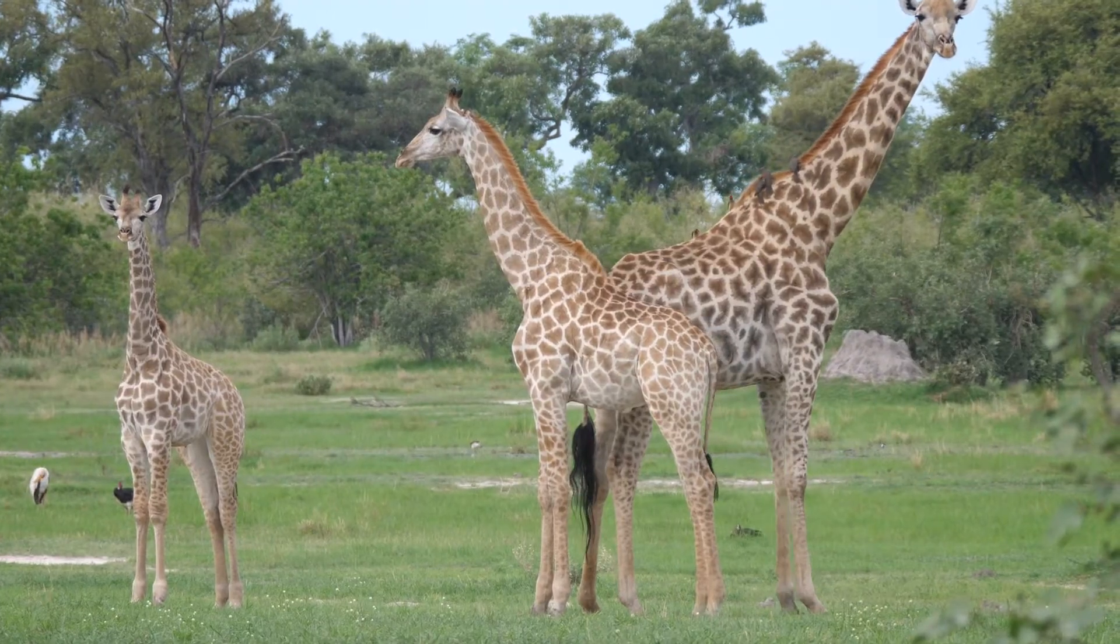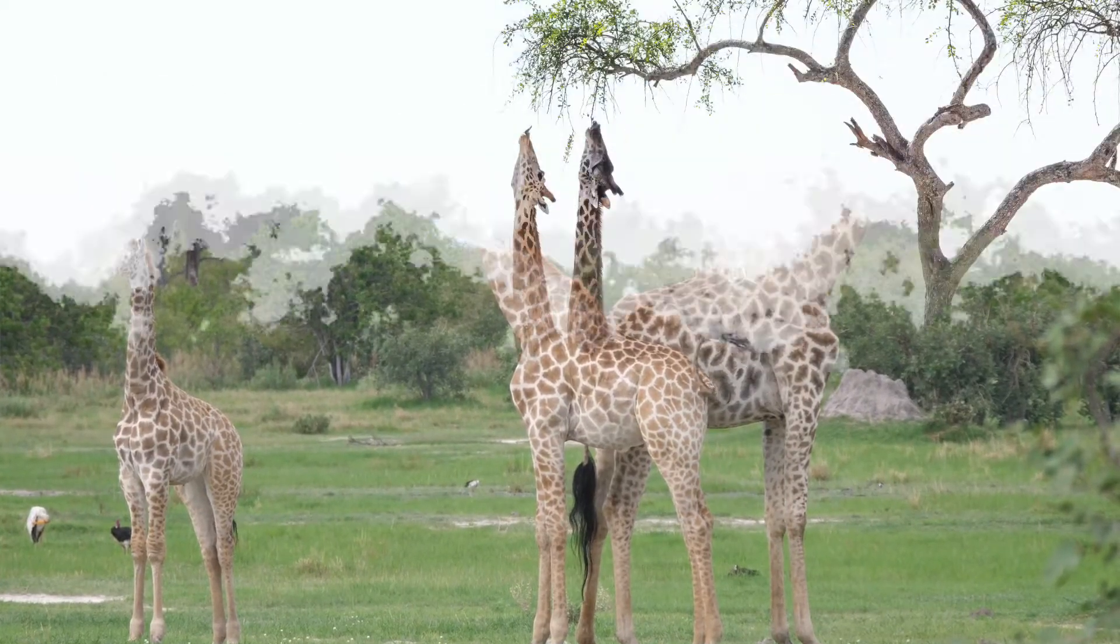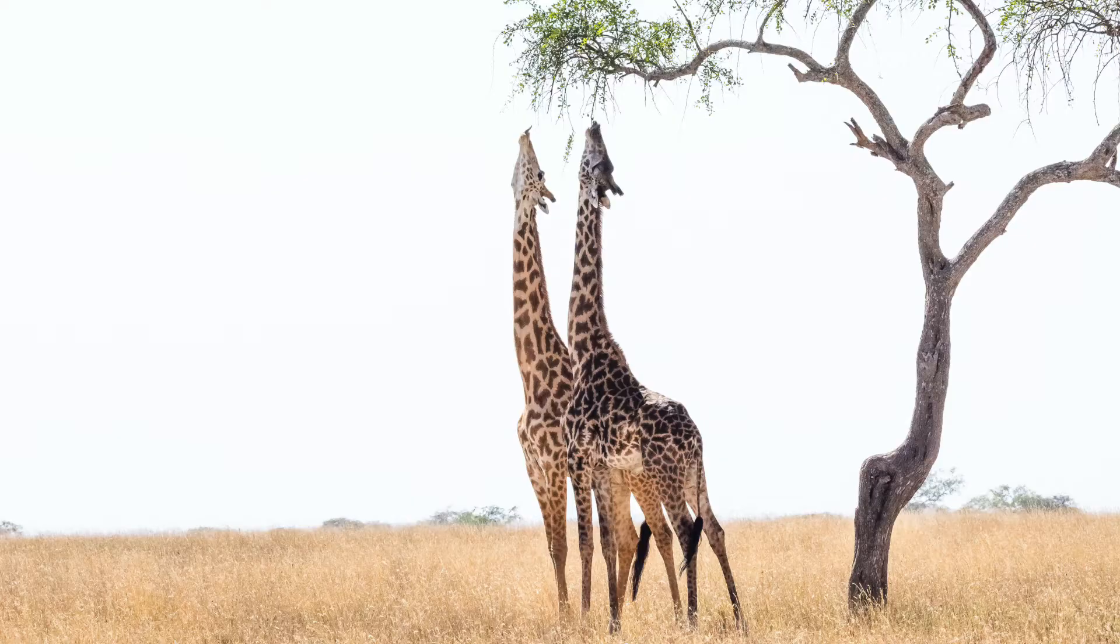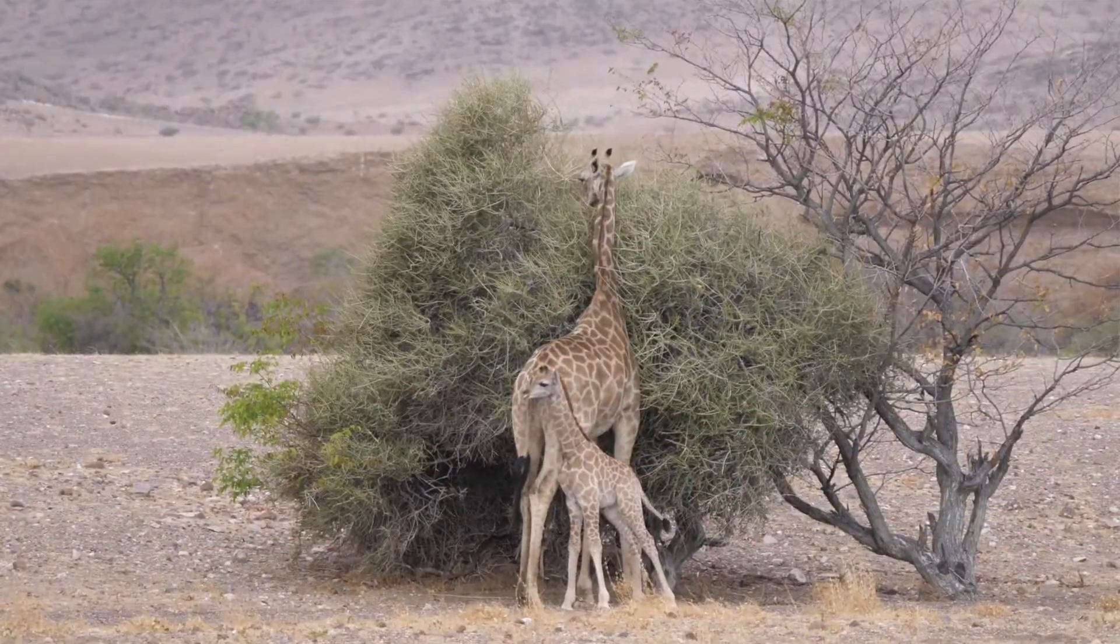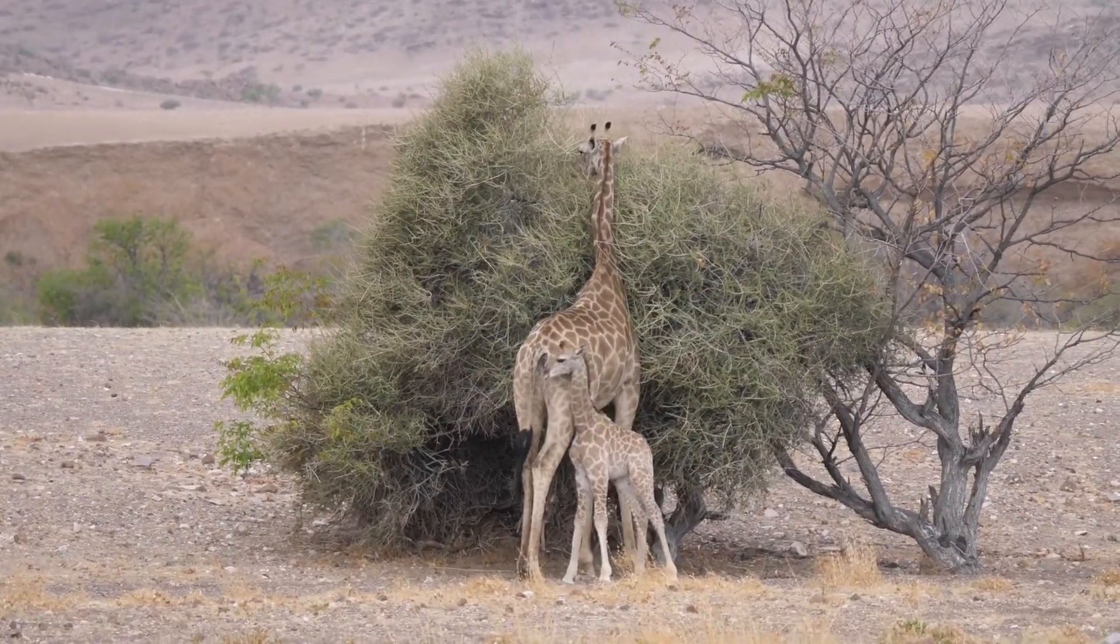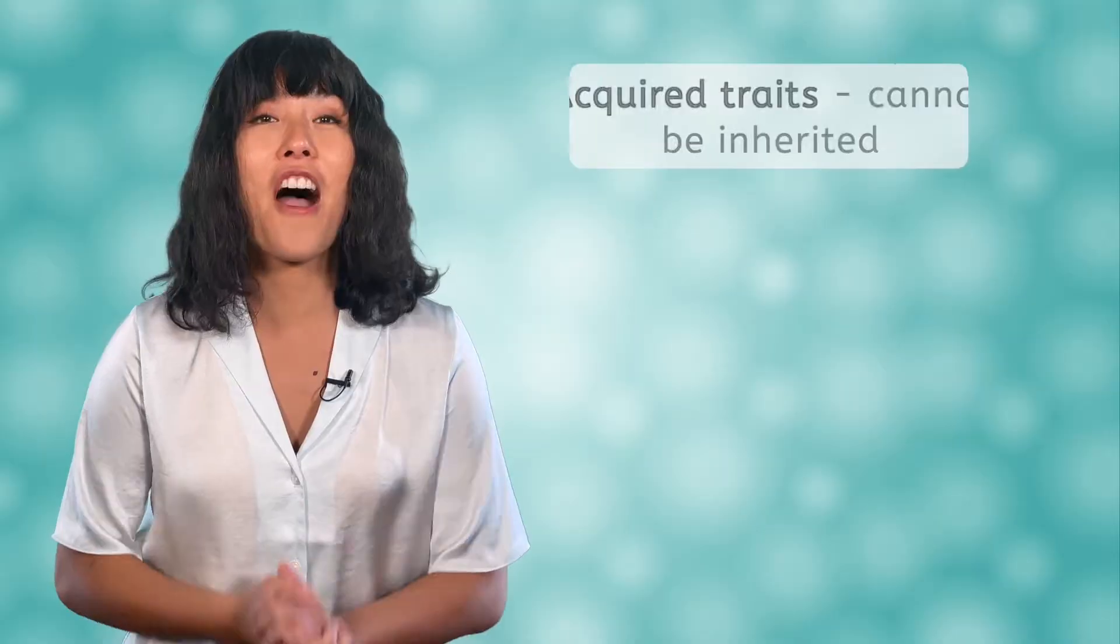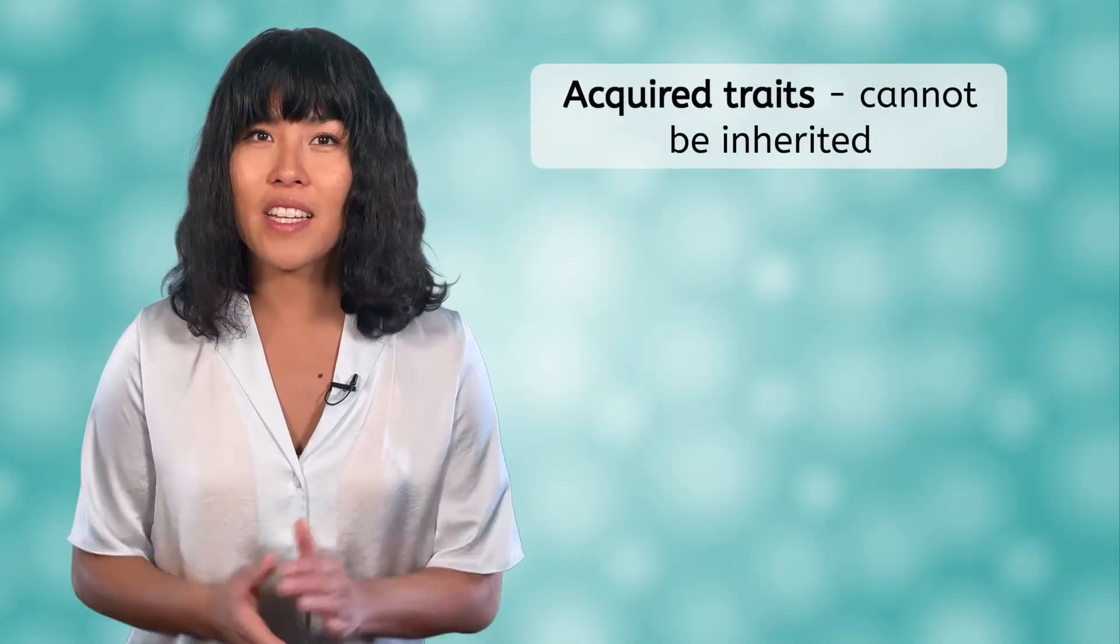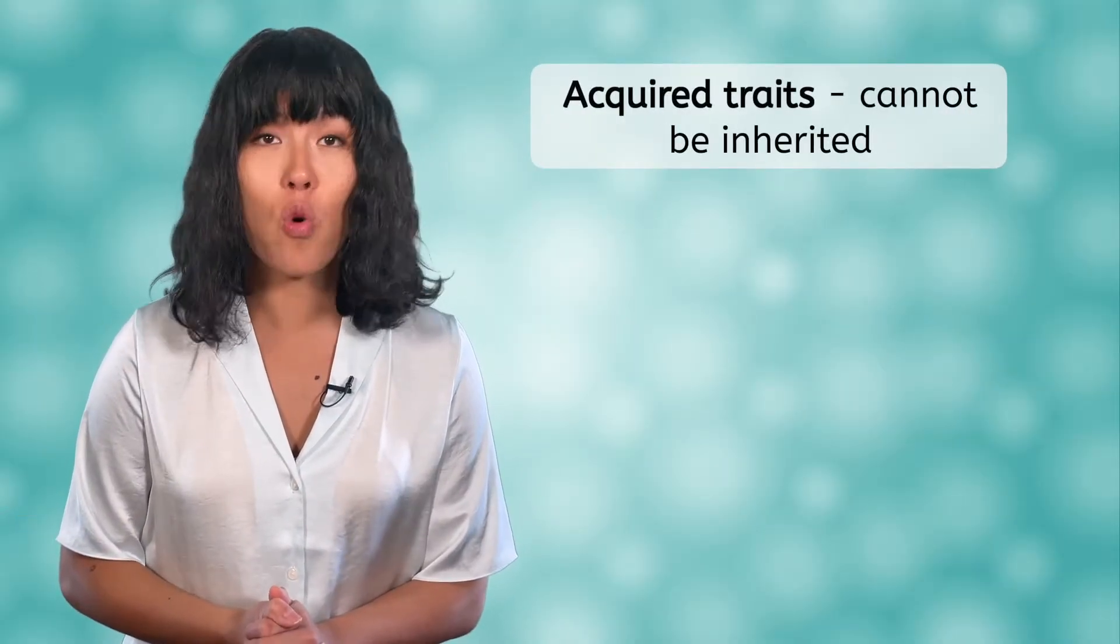It was commonly thought that when a giraffe stretched its neck to reach the leaves on those really high branches that the stretch might stick making his neck even longer and then the longer neck could be passed on to any baby giraffe that he might have. We now know that it doesn't quite work like that. Stretching your neck is an example of an acquired trait and acquired traits can't be passed on or inherited.